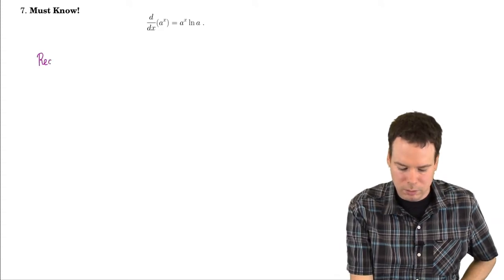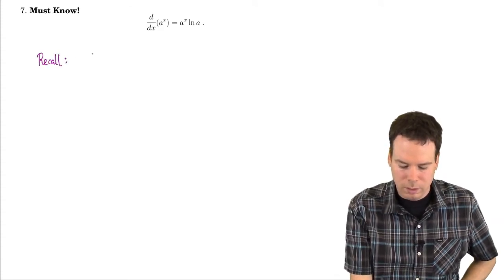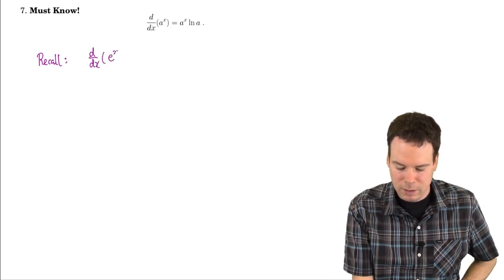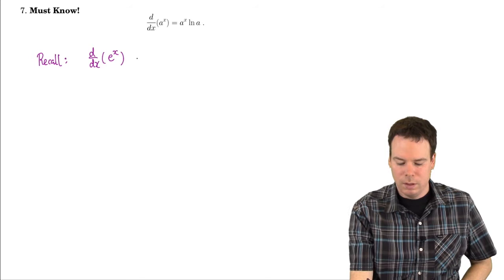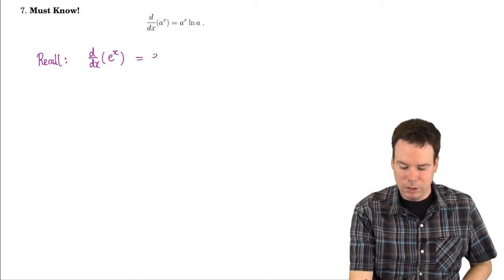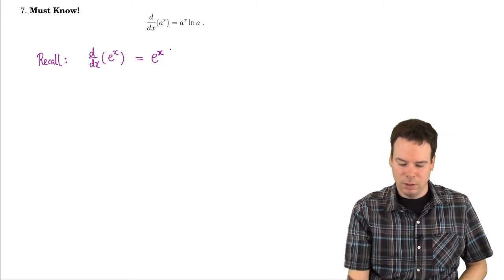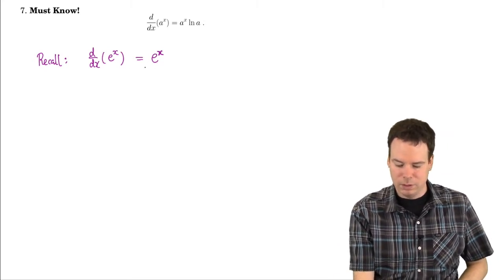Let's just recall what the derivative is when the base of the exponential is e. In this case, the derivative of e to the x is just e to the x. In some sense this was our defining property of the exponential function with base e, that it's going to have its own derivative.